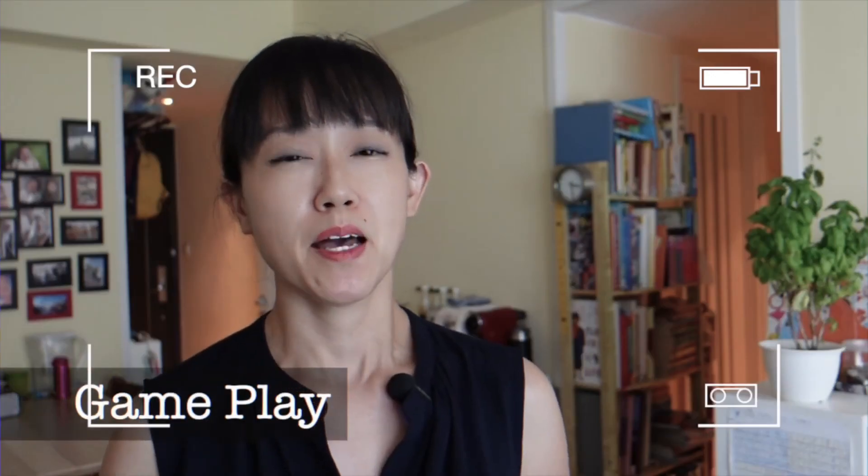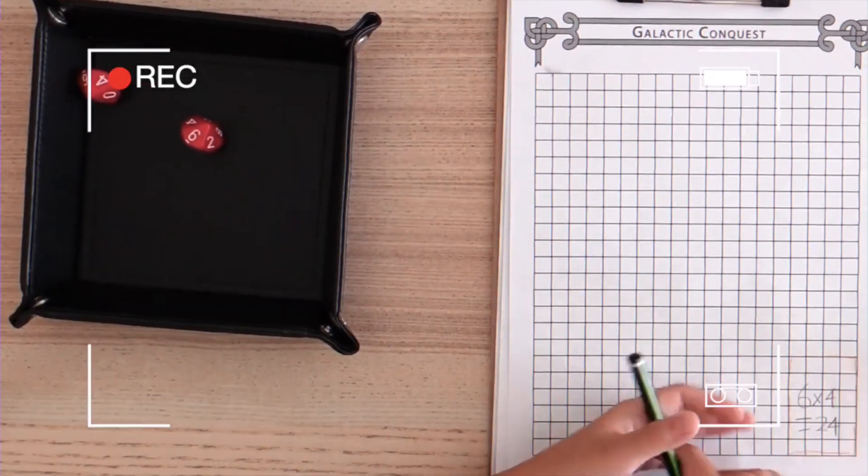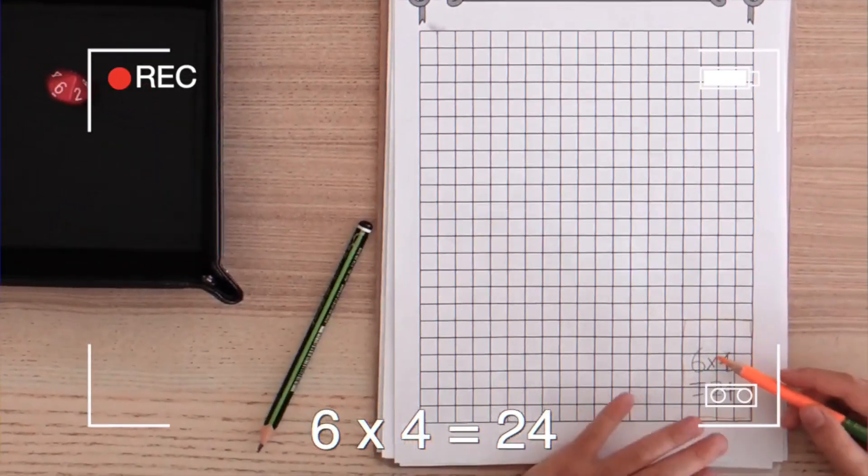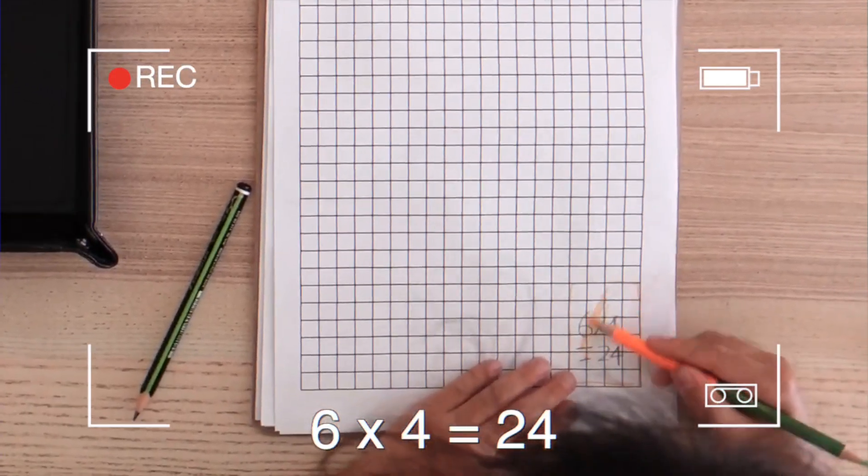To play this game, players take turns rolling two dice and drawing a rectangle on the game board with side lengths given by the two numbers they rolled. This is useful for practicing random multiplication factors up to the number of sides of the die you're using.